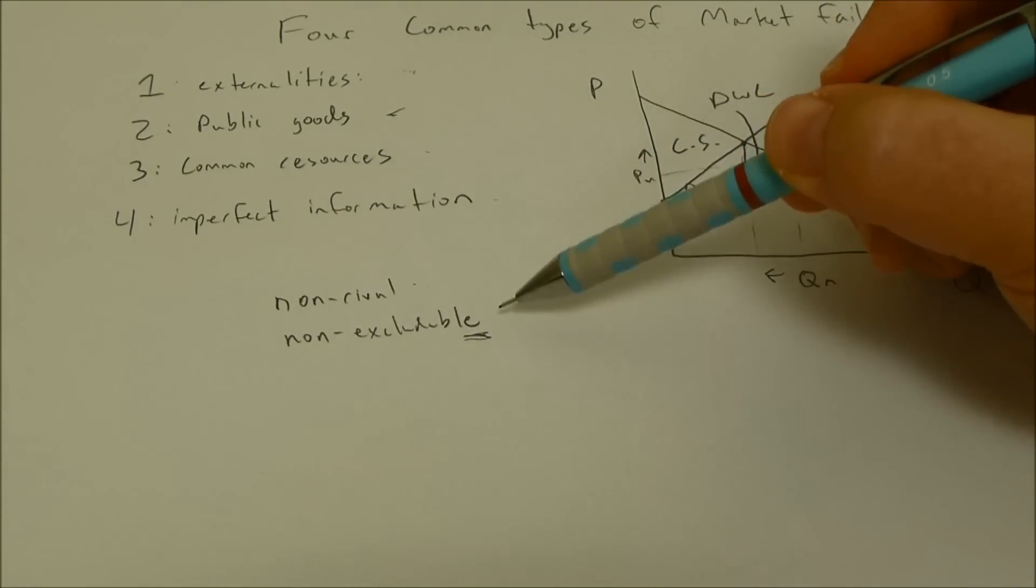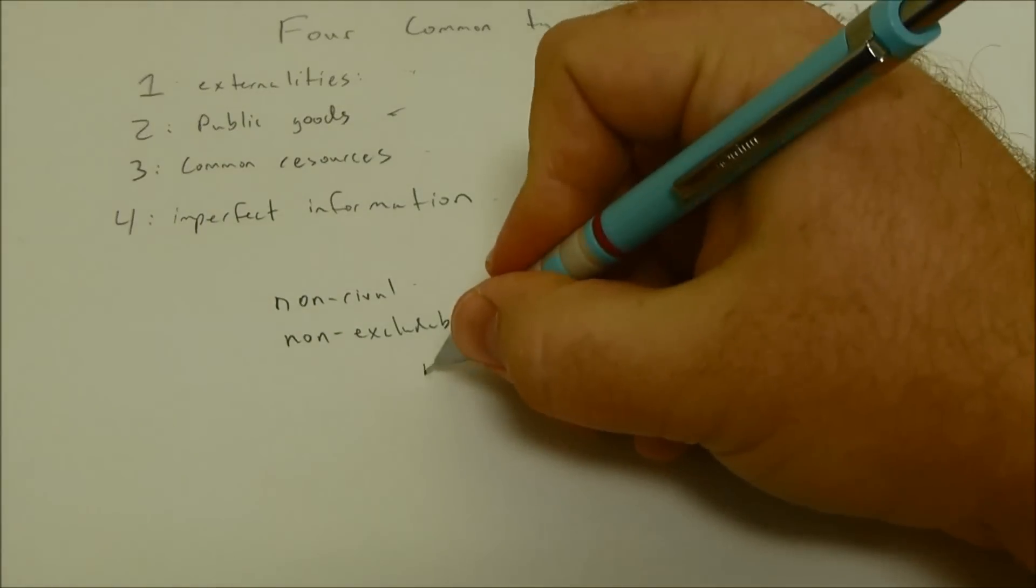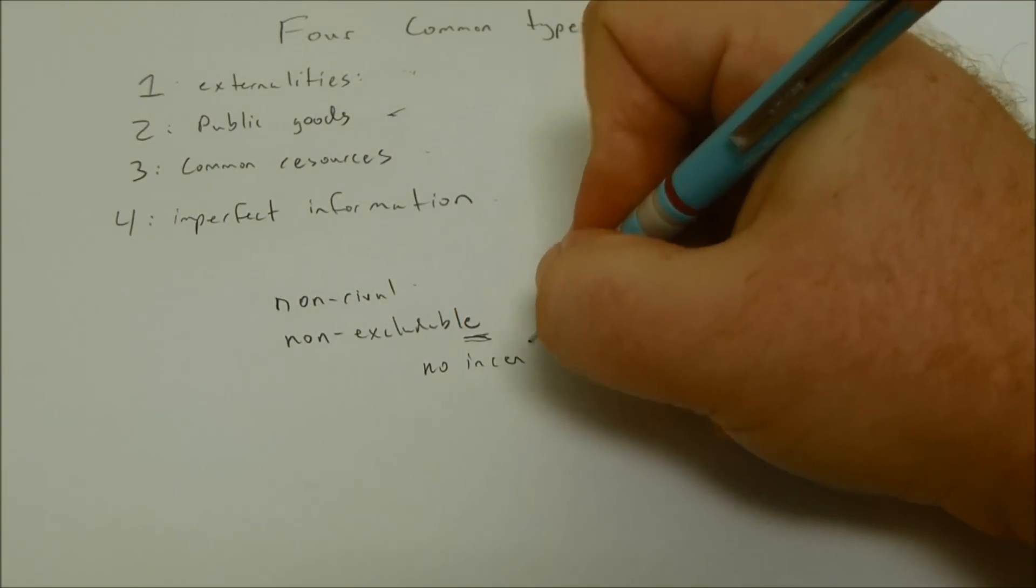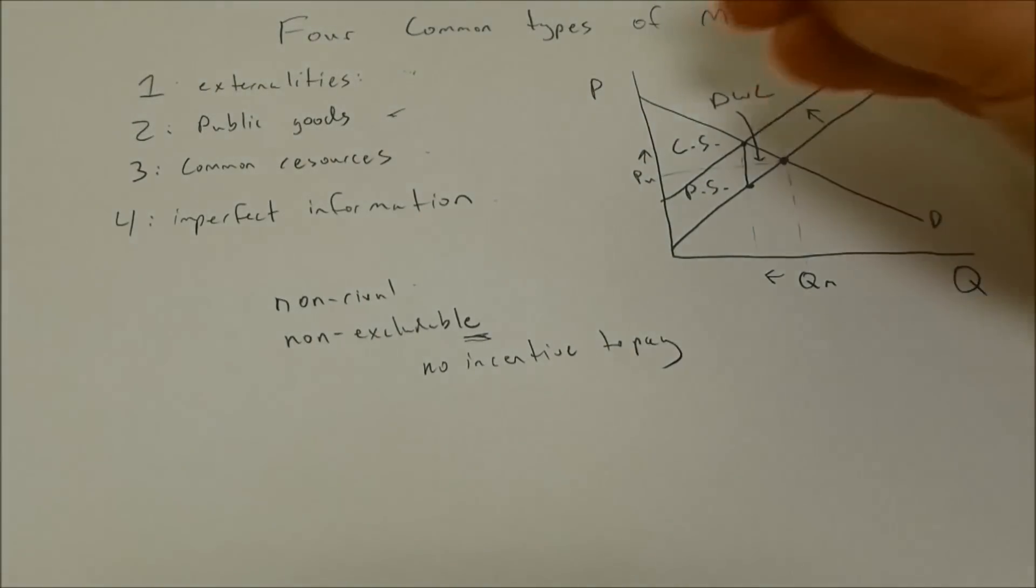So if a good is both non-rival and non-excludable, anybody can use it. There's no incentive to pay. And when there's no incentive to pay, we see this price drop down to zero.